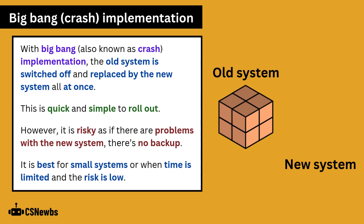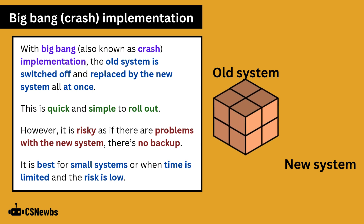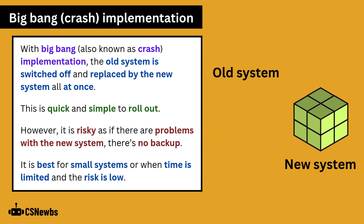With big bang, also known as crash, implementation, the old system is switched off and replaced by the new system all at once. This is quick and simple to roll out, however it's risky as if there are problems with the new system there's no backup. It is best for small systems or when time is limited and the risk is low.